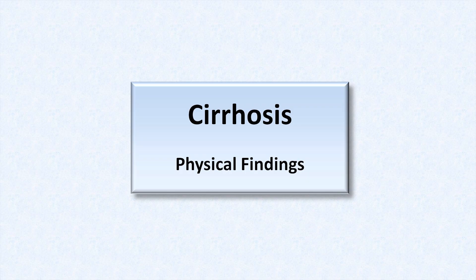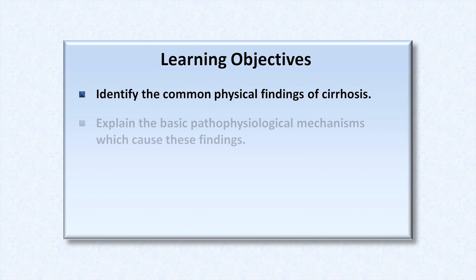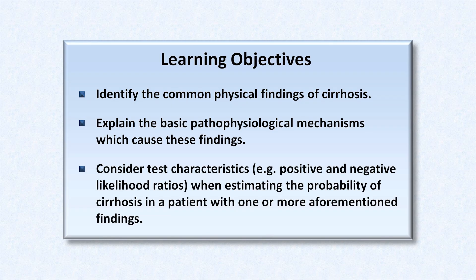Hello, everyone. Today I will be discussing the physical findings of cirrhosis. The learning objectives are to identify the common physical findings, to explain the basic pathophysiological mechanisms which cause these findings, and last, to consider test characteristics such as positive and negative likelihood ratios when estimating the probability of cirrhosis in a patient with one or more aforementioned findings.